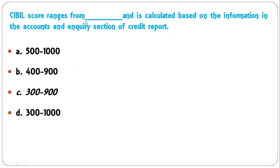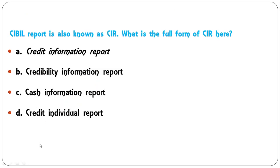The CIBIL score ranges from what to what, and is calculated based on the information in the accounts and inquiry section of the credit report? The CIBIL score ranges from 300 to 900, so C is the correct answer.